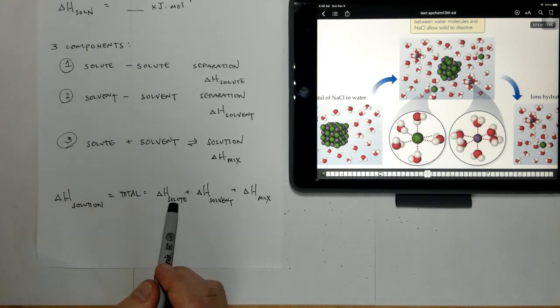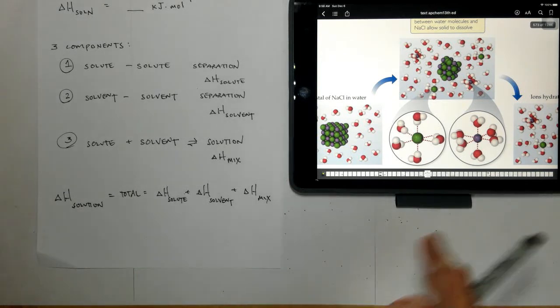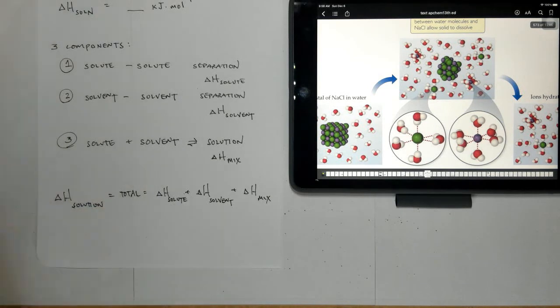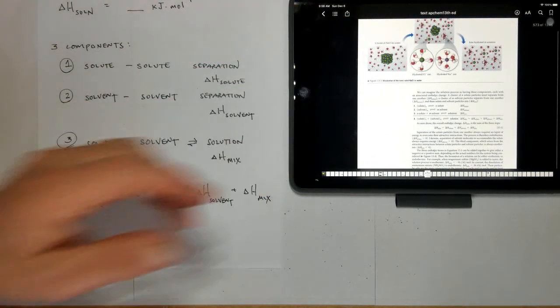So these all add together to give us an energetics of the solution formation. So the separation of the solute, the separation of the solvent, and the energetics of the mixing all have to come together. And that gives us the enthalpy of making a particular solution.